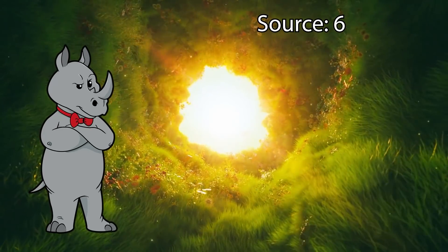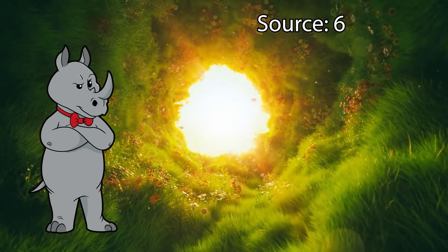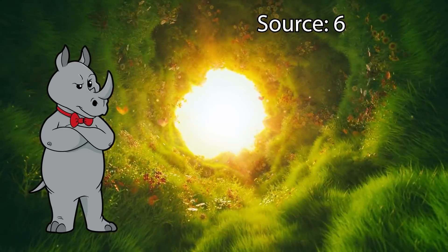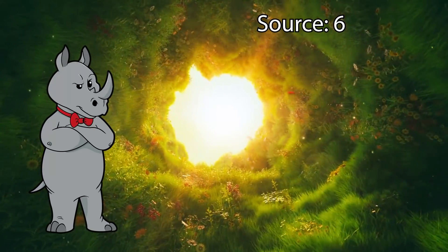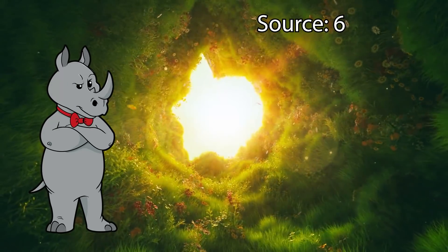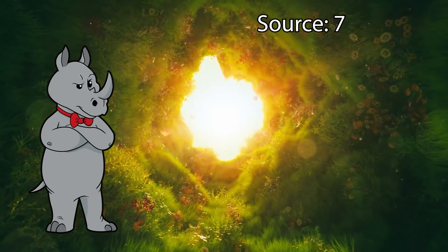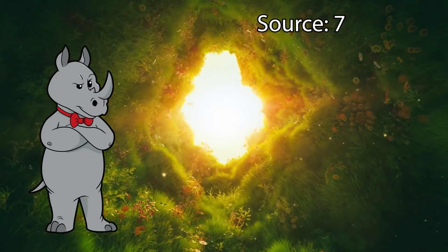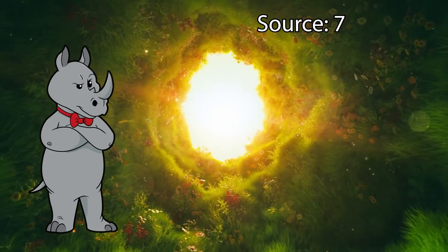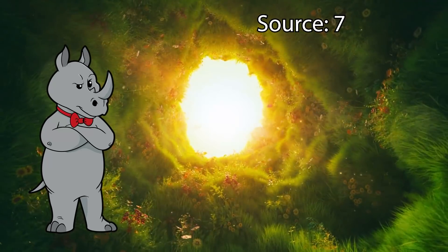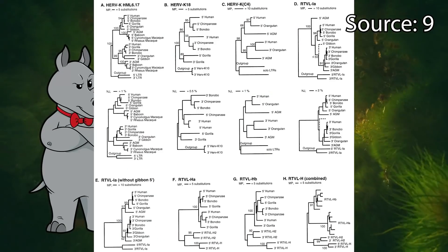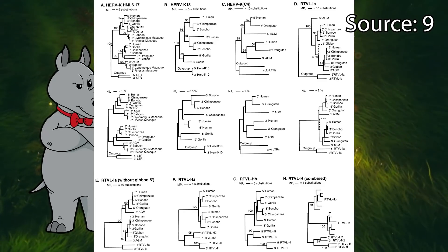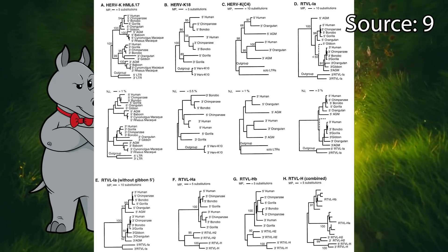So because each ERV that is present across multiple species can be used to construct four independent phylogenies, one from the general distribution of the ERV, one from studying the sequence homology of the ERV, and two from the LTRs, we have four independent phylogenies that can be used to check the work of the other three. And on top of that, there are literally hundreds of these ERVs that have been used to construct phylogenies within the great ape families, all of which are in high agreement with each other.